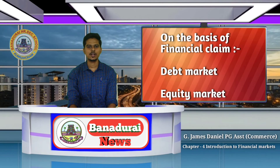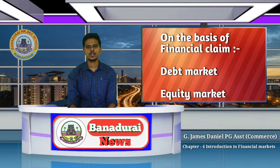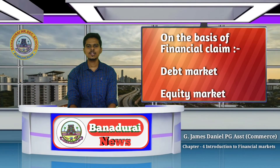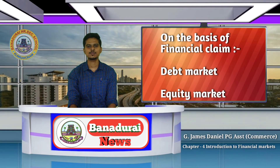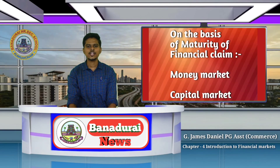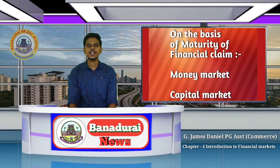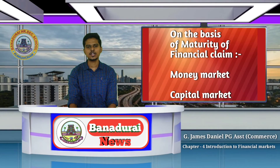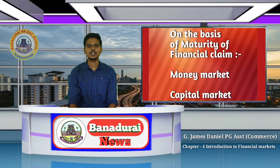In the debt market, debt instruments such as Government Bonds and Securities are traded. The second type is the equity market, where company shares are traded. There are also two sub-types: the money market, which deals with short-term financial claims — one year or below one year.